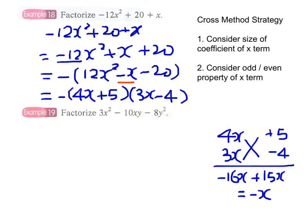So we have two strategies for doing the cross method. The first one: we have to consider the size of the coefficient of the x term. The second one, which is much more important, is that we should consider the odd or even property of the middle x term. Look, two even numbers cannot give an odd number. If you have an odd number in the x term, you should have one odd number and one even number.